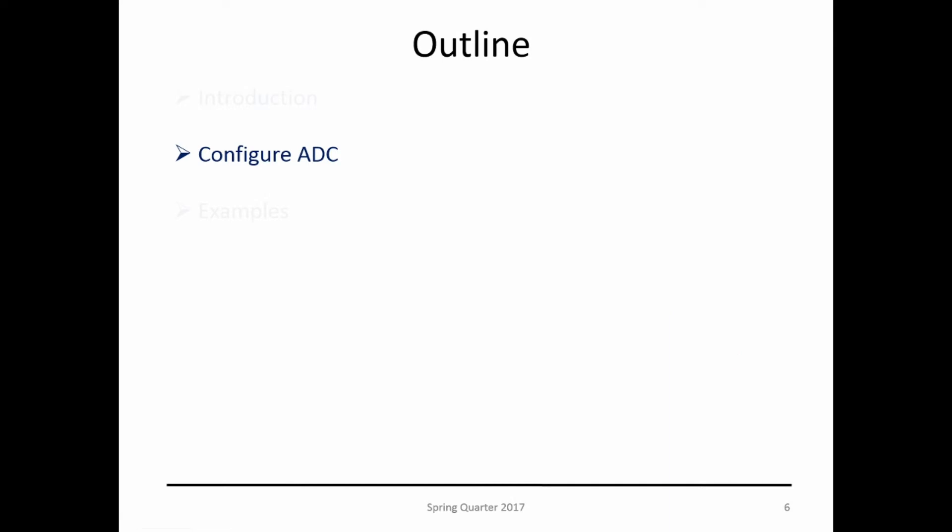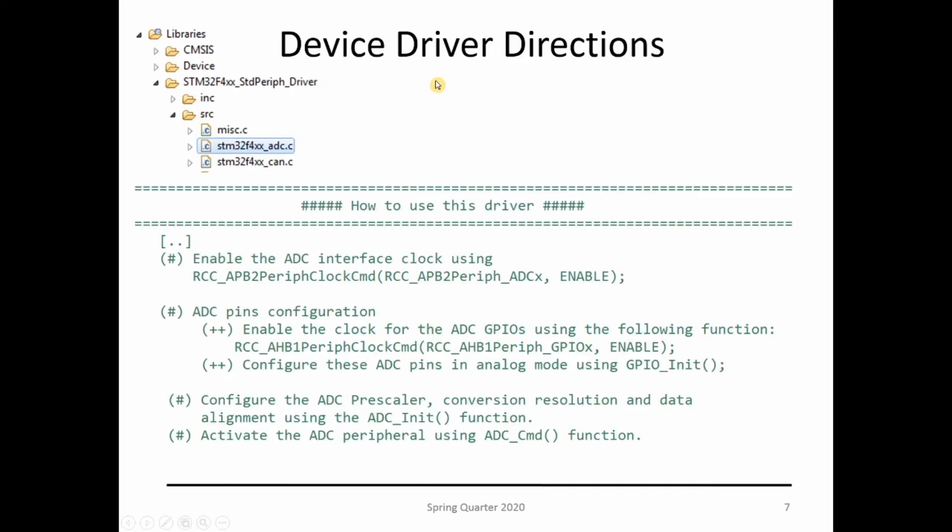Let's go over the basic configuration of the ADC. If you turn on your IDE and create a project, go under the device driver library and open the ADC. This is how you use the driver: you enable the ADC interface using this function—it's connected to the APB2 bus—and then enable the clock for the pins that you want to use with the ADC, whatever port: A, B, C, or D. Then parameterize those ADC pins to be in analog mode.